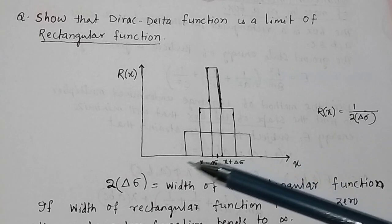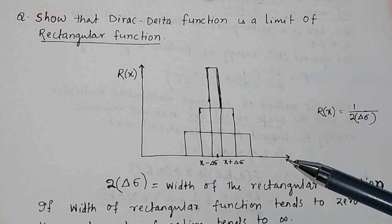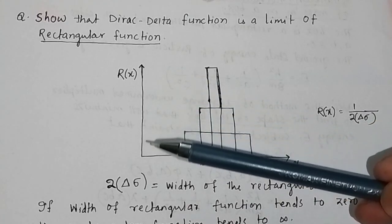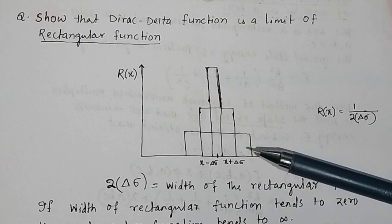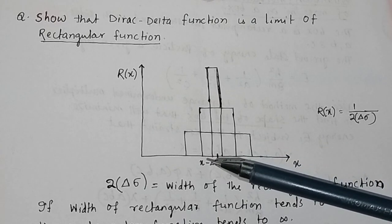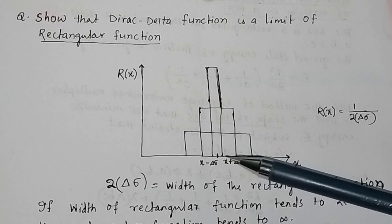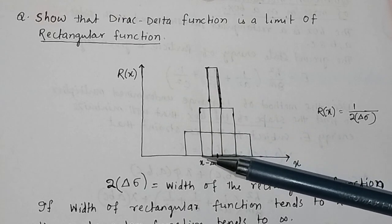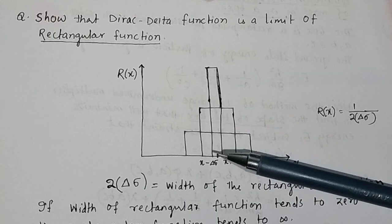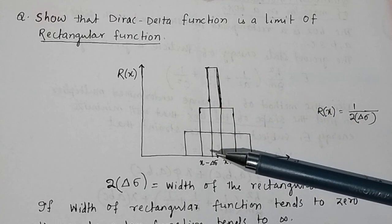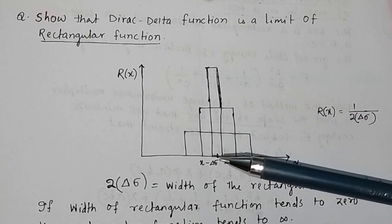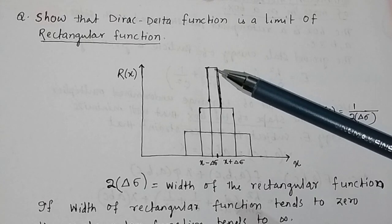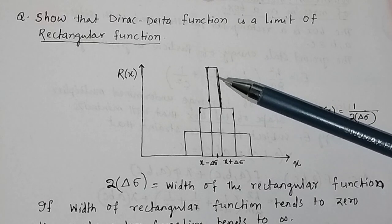Consider this rectangular function plotted with x on the x-axis and R(x) on the y-axis. If the width of the rectangle is decreasing, then the height will be increasing. As the width keeps decreasing and the height keeps increasing, when the width reaches 0, the height becomes infinite. This limiting case corresponds to a rectangular pulse.